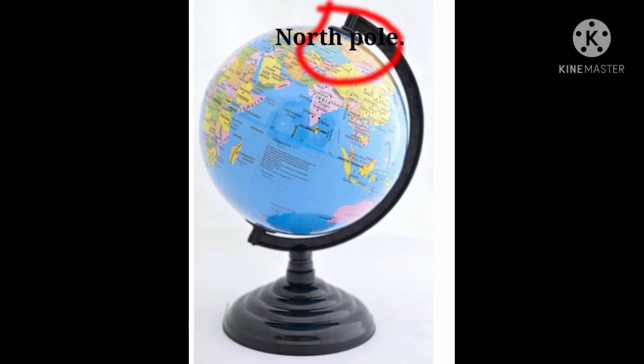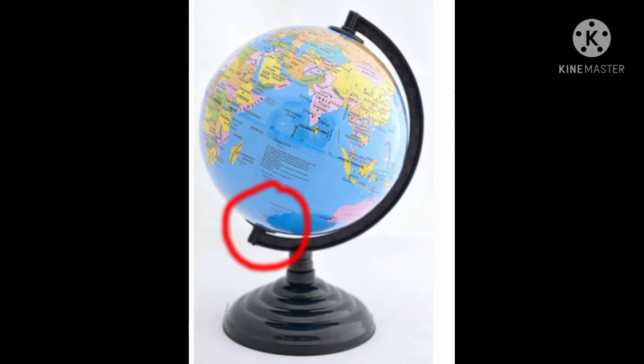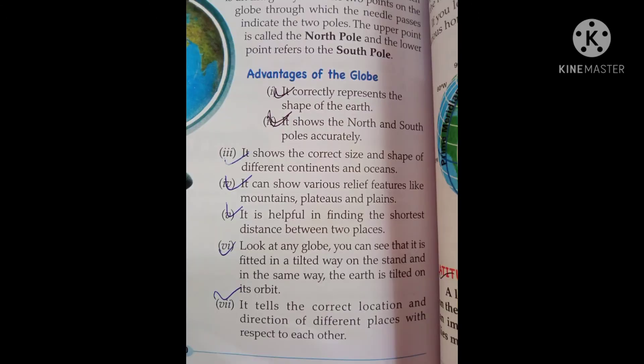The upper point is called the north pole and the lower point refers to the south pole. Now, the advantages of the globe. First, it correctly represents the shape of the earth.